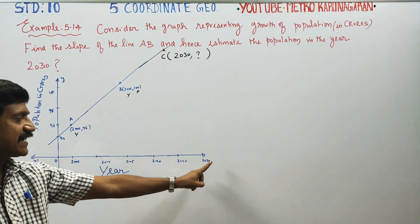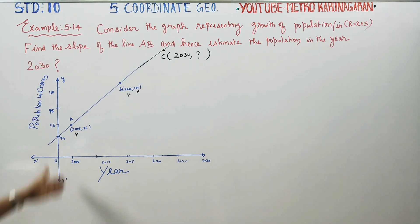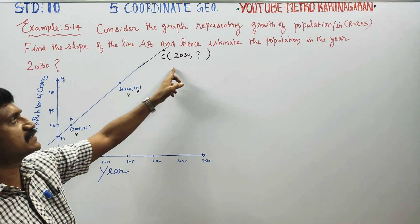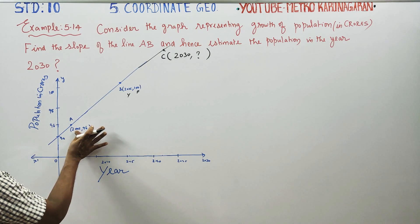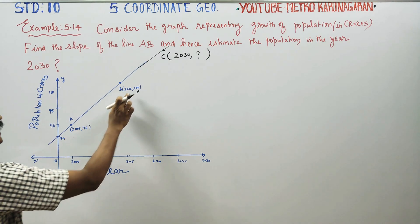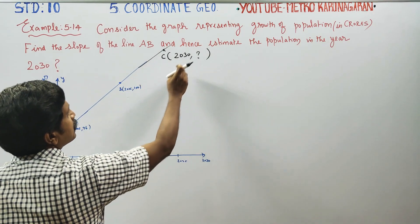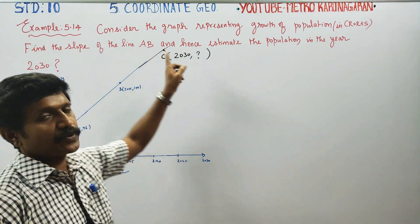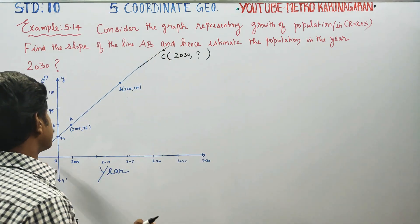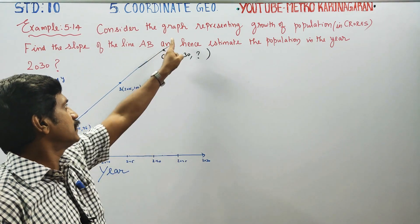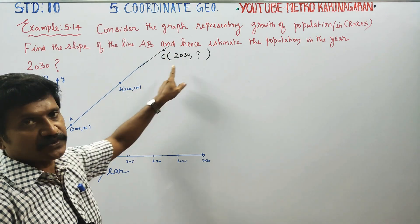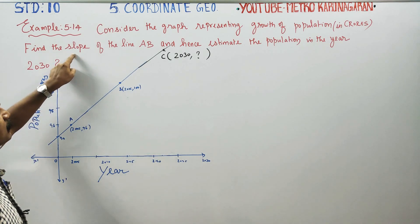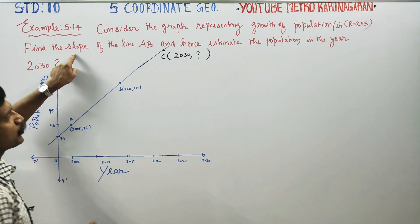Year is the x-axis and population is the y-axis. The key idea here is that the points are collinear — they lie on a straight line. This is the collinear idea, and we need to find the slope of AB.